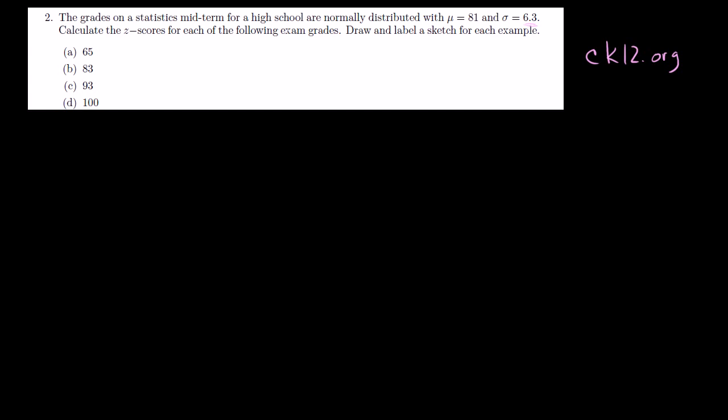Calculate the z-scores for each of the following exam grades. Draw and label a sketch for each example. We could probably do it all on the same example. But first, what is a z-score? A z-score is literally just measuring how many standard deviations away from the mean. So we have to calculate how many standard deviations each of these are from the mean. That's their z-scores.